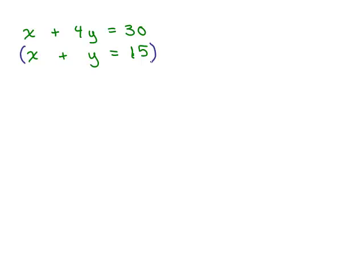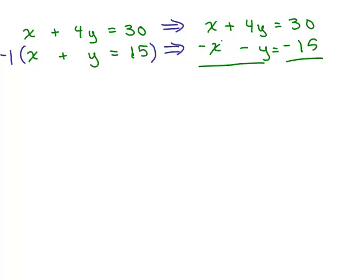So here are two equations. I'm going to multiply the second equation by negative 1. And now I'm multiplying both sides of the equation. So the top equation, I'm just going to leave as is. X plus 4Y equals 30. And I'm going to multiply both sides of the equation by negative 1. So negative 1 times x is negative x, negative 1 times y is negative y, and negative 1 times 15 is negative 15. And now I can add the left side, that gives me 3Y. And at the other side, I've got 30 minus 15. That's 15. Divide both sides by 3. And I get y equals 5.